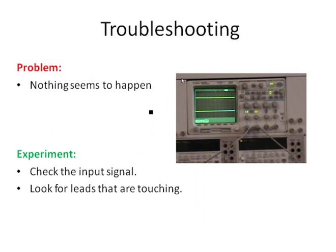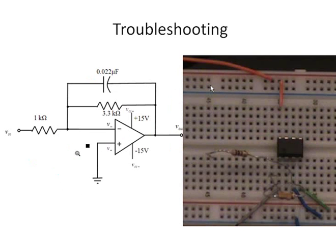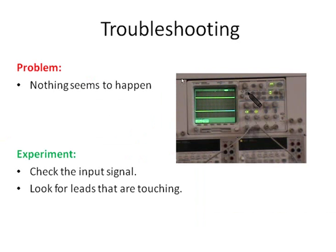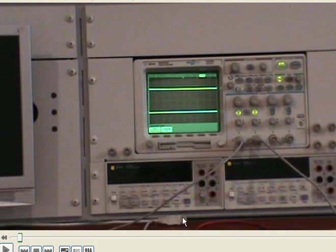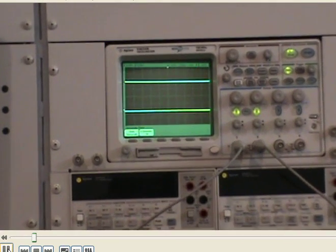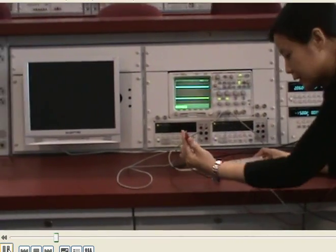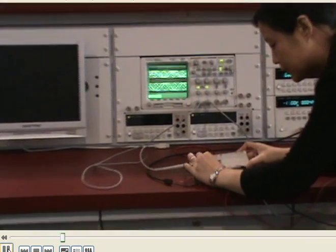If the problem is that nothing seems to happen, the first thing we need to check is the input signal. We can show both input and output voltages on the oscilloscope. Apparently the input signal is zero, so we need to check if the power supply is connected correctly. Here we have a loose connection for the input voltage.